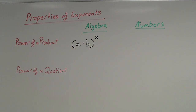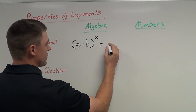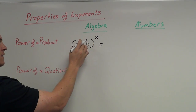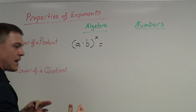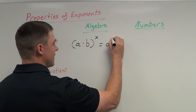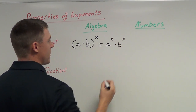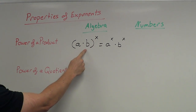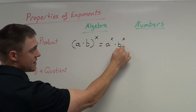Power of a product simply states that you can take the individual numbers inside the parentheses and distribute the exponent evenly between those two. So if I have a times b, this quantity to the x, I can take this x individually to each one of these on the inside — kind of like distributive property, not exactly the same thing, but very similar. So in this case I would have a to the x power times b to the x power.